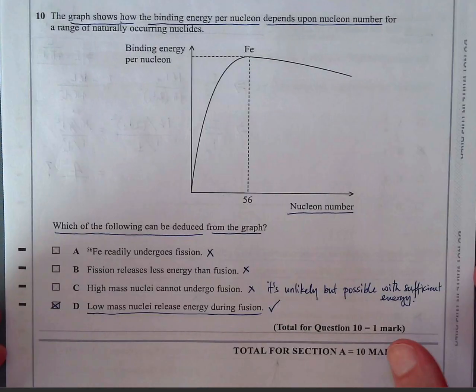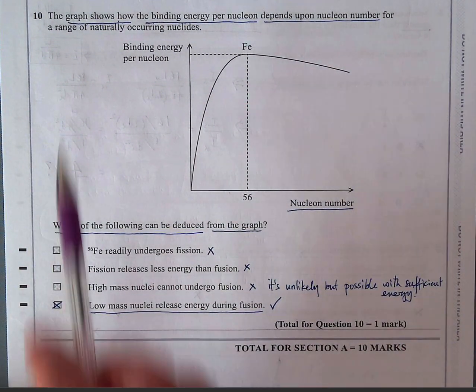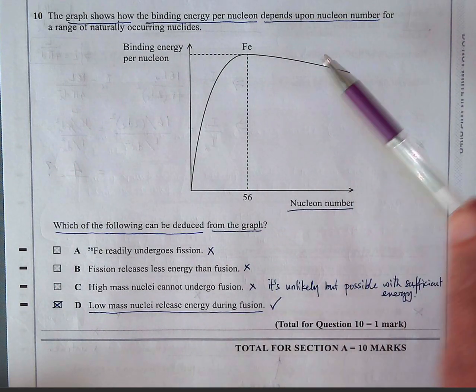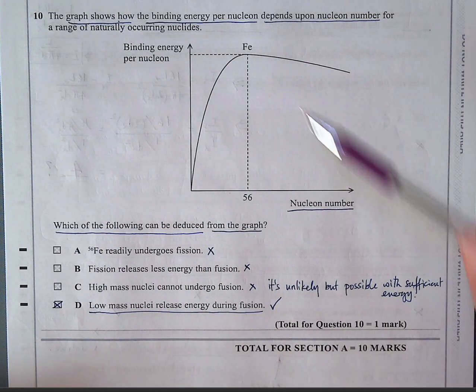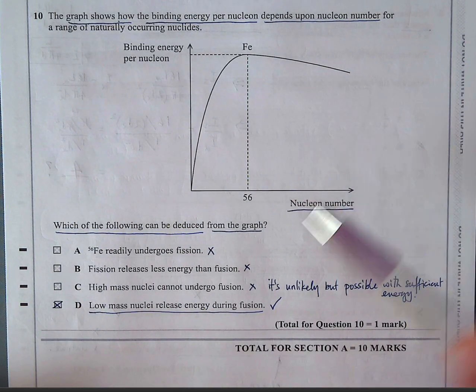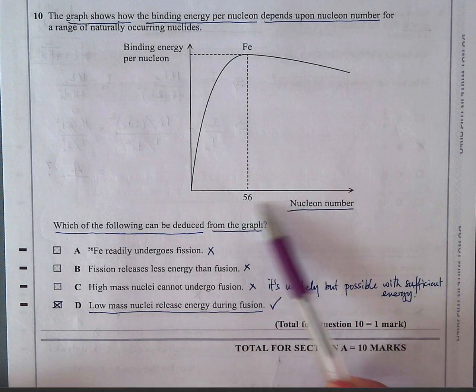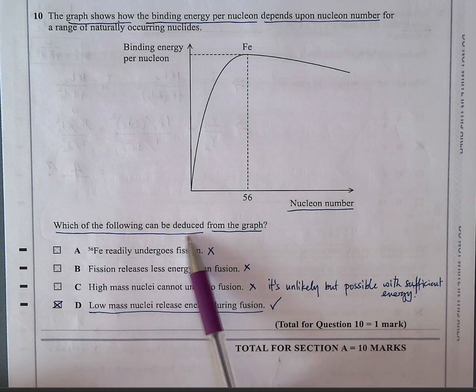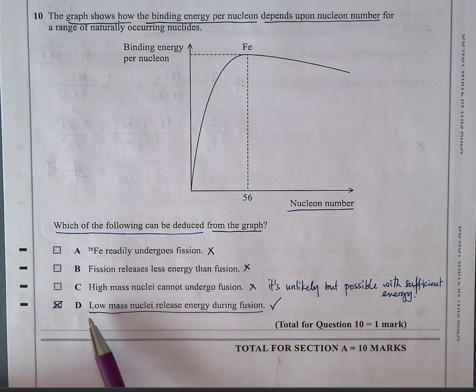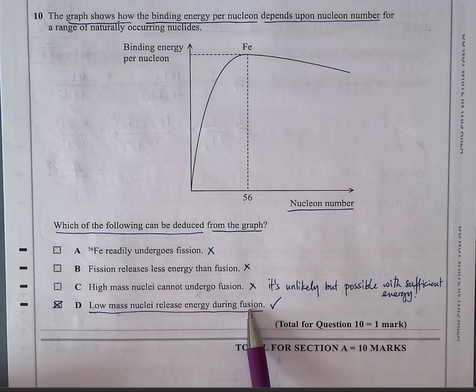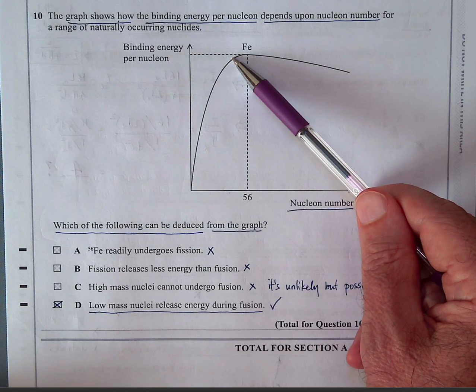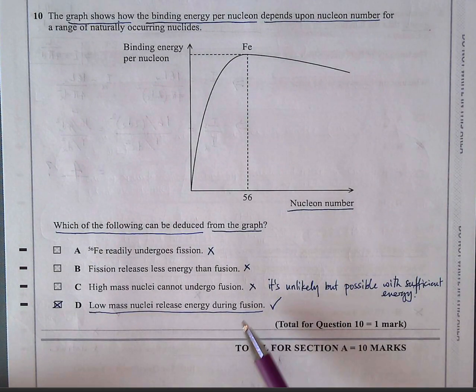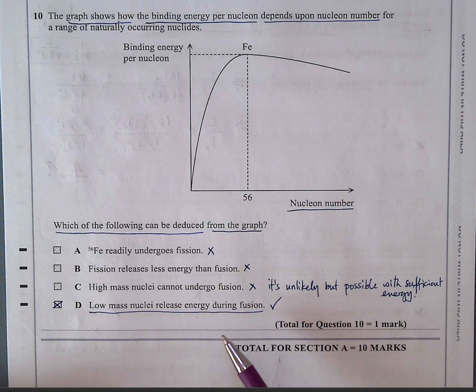And then question 10, the last of the multiple choice. The graph shows how the binding energy per nucleon depends on the nucleon number. This is a common graph you need to know. So it's a way of saying which is the most stable element, and iron is at the peak, nucleon number 56, not element number. Which of the following can be deduced from the graph? The answer is D. Low mass nuclei release energy during fusion. Well, we know that because you've got low mass is here. So they're going up the curves. They're producing something more stable. So these release energy during fusion. It's like the equivalent in chemistry of exothermic reactions. But of course, this is a nuclear reaction, not a chemical reaction.